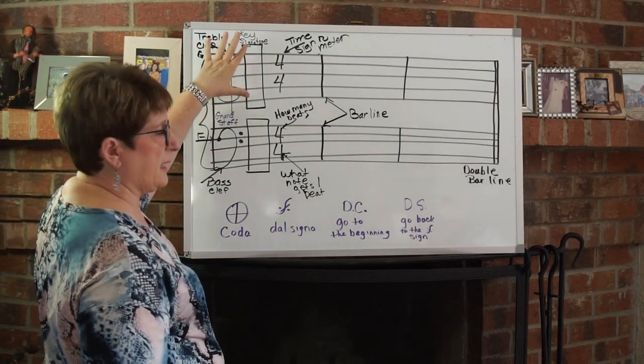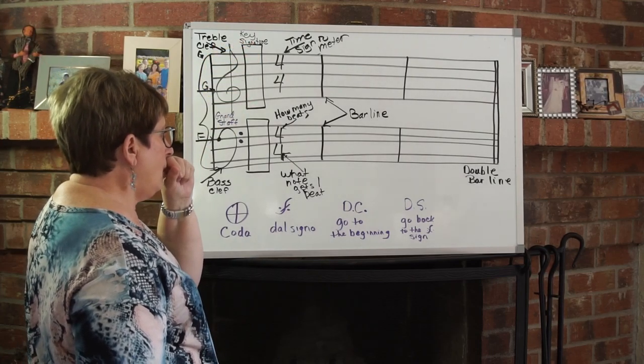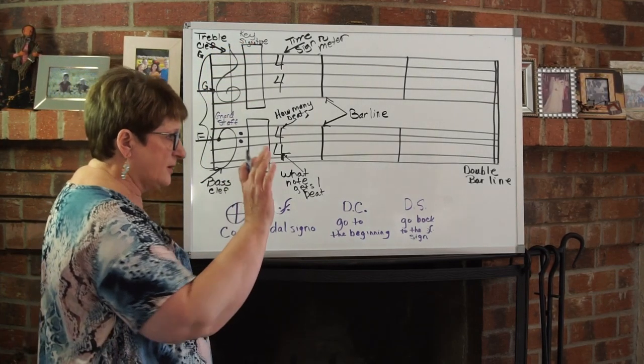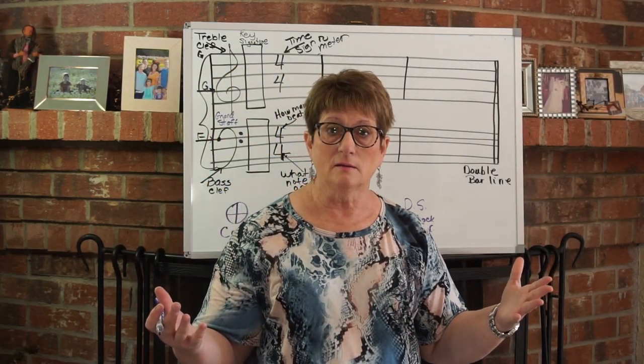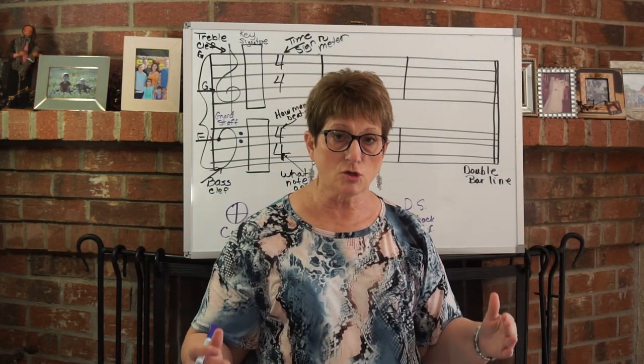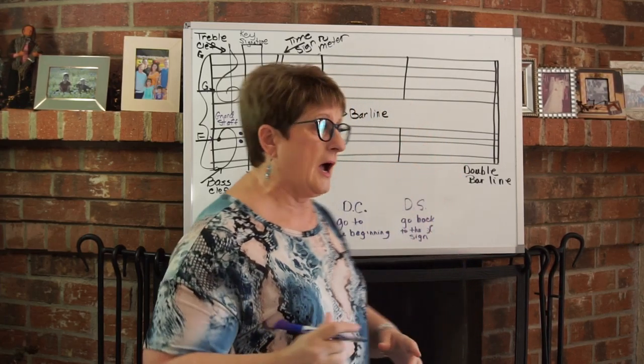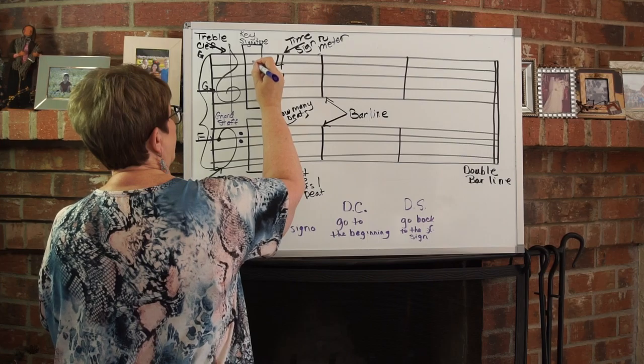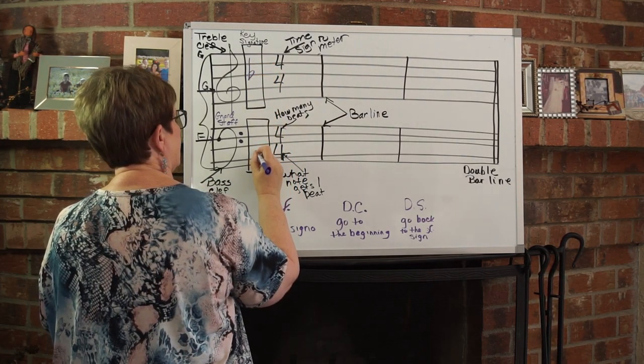The next space that is left after our clef signs is the key signature. If there's nothing written there, it's still a key signature. And do you remember what that is? The key of C. No sharps, no flats. That space still exists. I may put a sharp or a flat in there. I may put that one flat sign and make it the key of F.